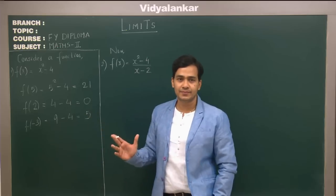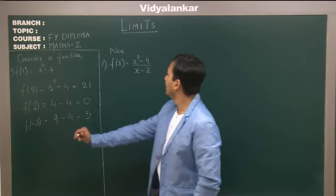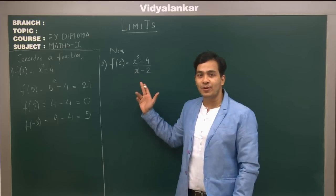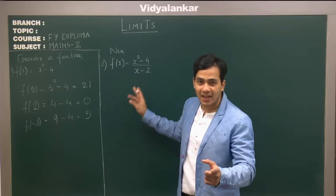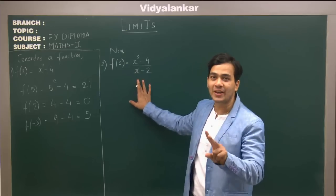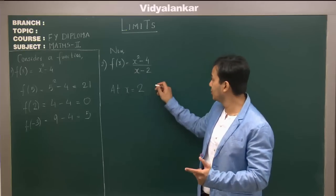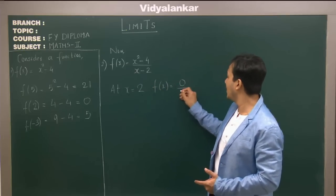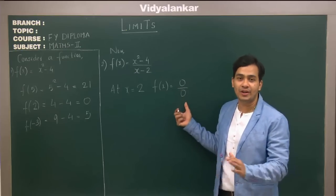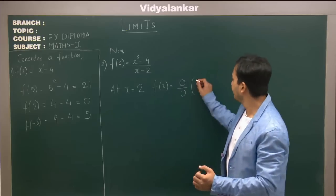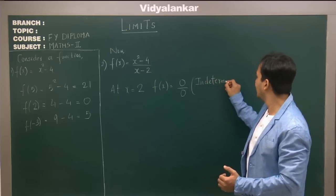Now what will happen if you take this kind of function: (x² - 4) / (x - 2)? For all values of x this is defined, except at x = 2, where the denominator becomes 0. In fact, both the numerator and denominator become 0, so the function turns out to be the 0/0 form, which is totally not defined. In mathematics this is also called the indeterminate form.